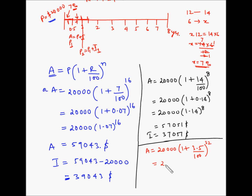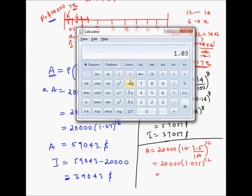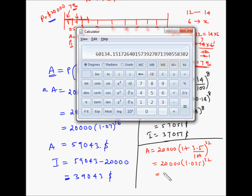That becomes 20,000 × (1.035)^32. Calculating: 1.035 to the power 32 multiplied by 20,000 equals $60,134. So the interest with quarterly compounding is 60,134 − 20,000 = $40,134.